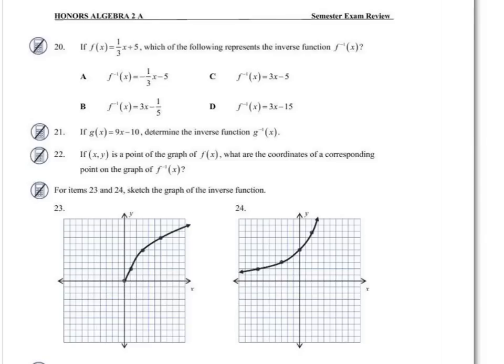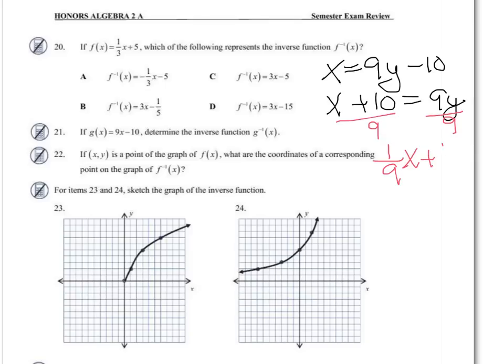We're going to use the same process for 21. x equals 9y minus 10. I'm going to add the 10. Divide by 9. So you can say x plus 10 divided by 9, or if I was going to graph it, I want to make sure I would know the slope and the y-intercept. So I would do the 1 over 9 as this coefficient, and then 10 over 9 as the constant.